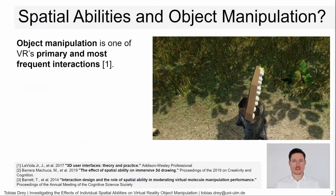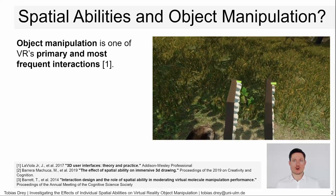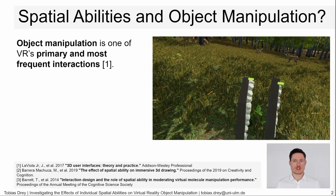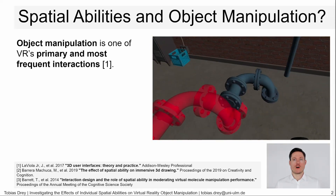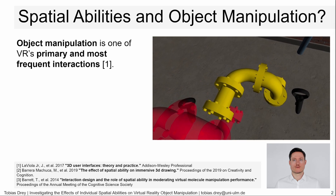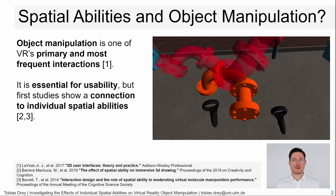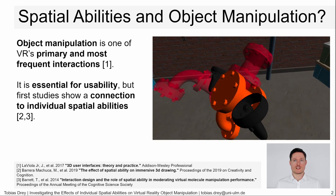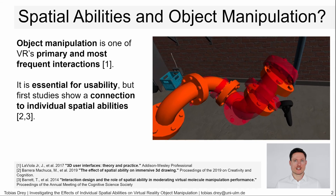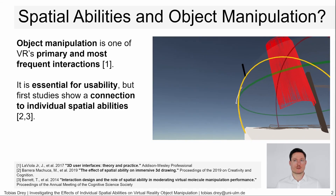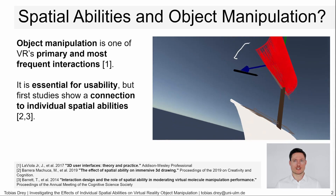Manipulating objects is ubiquitous in virtual reality interactions. It is done by everyone in games for leisure, education and work. Therefore, it must work smoothly for all users to achieve good usability. However, we must consider individual spatial abilities, a capability where individuals differ strongly. Therefore, we expect a highly individual and diverse effect on the task performance and usability of VR object manipulation interaction techniques.